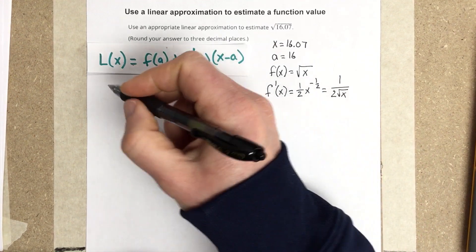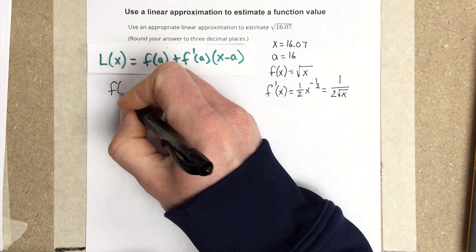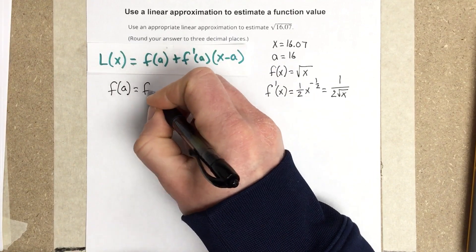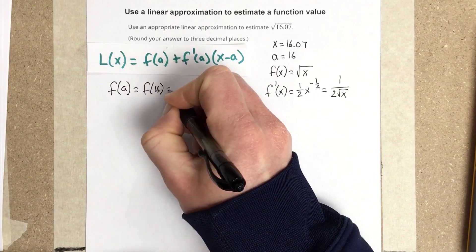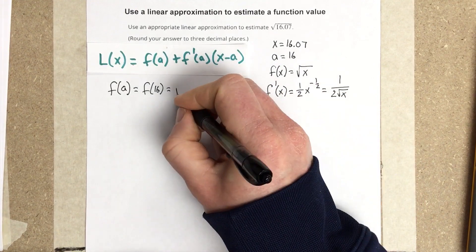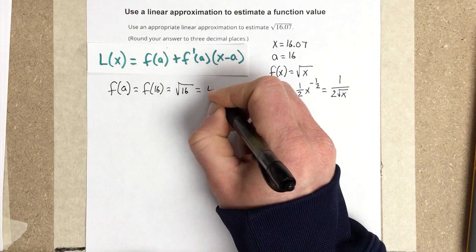Now, I want to find f of a, which my a value is 16, so I want to know f of 16. And when I do that, I'm going to plug it into this square root function, so I have root 16, which is 4.